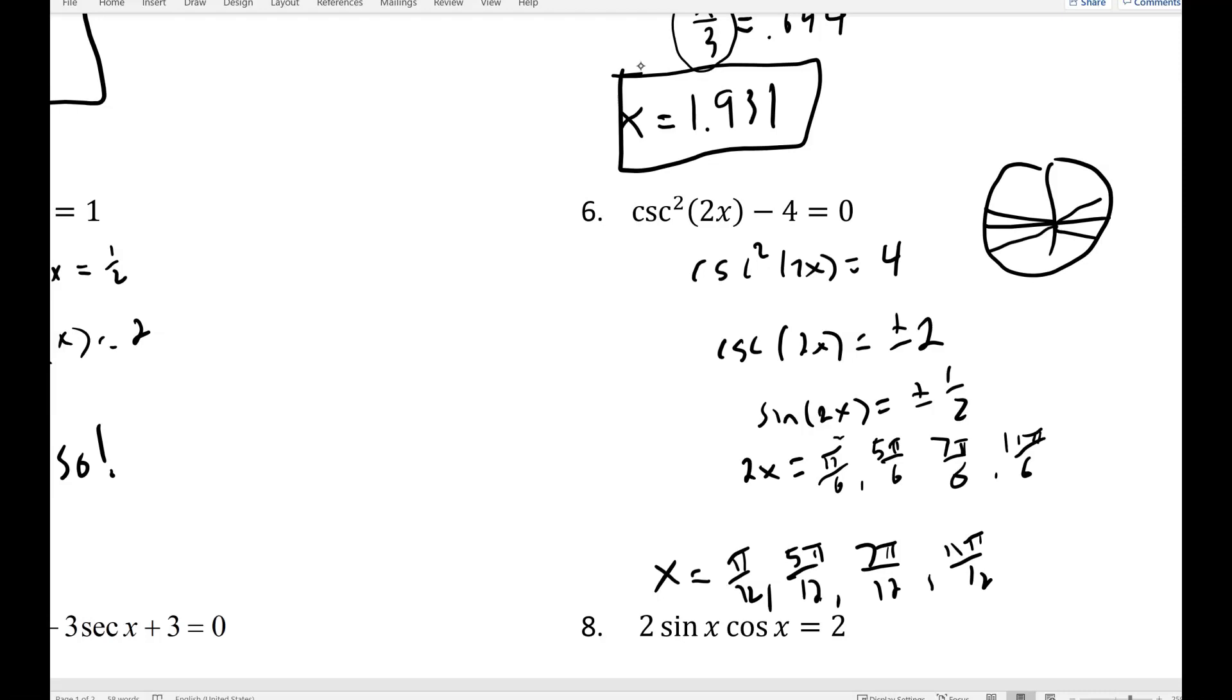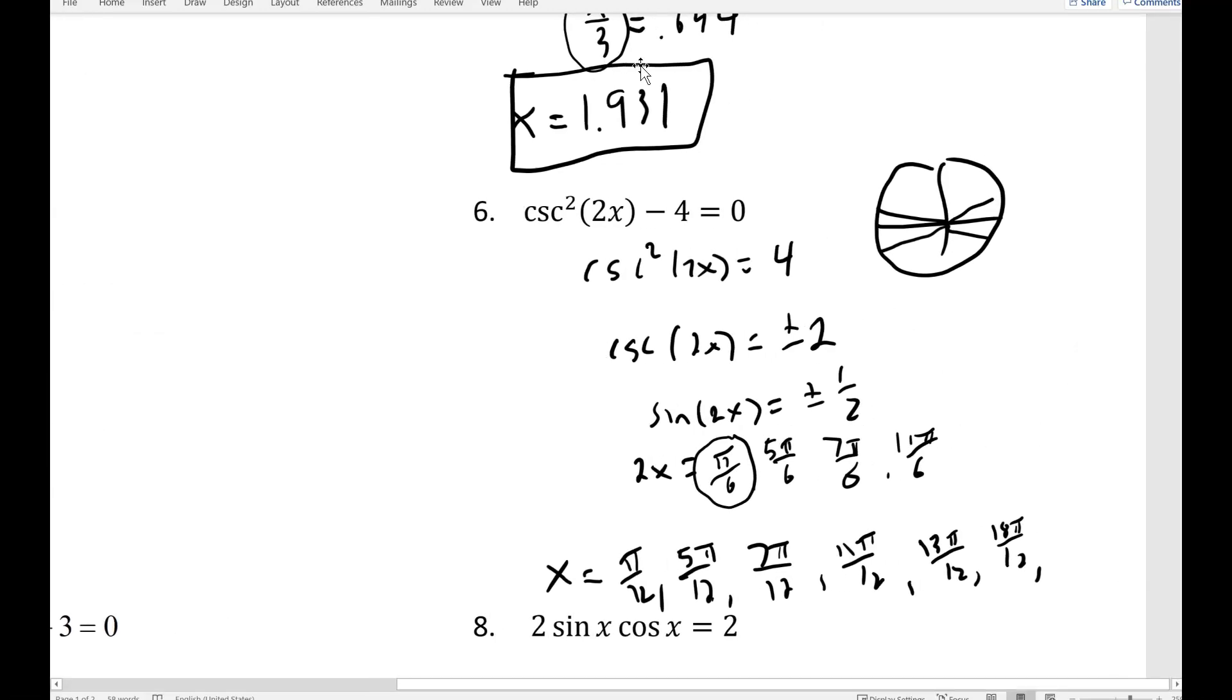So that would be x equals pi over 12, 5 pi over 12, 7 pi over 12 and 11 pi over 12. But there's going to be more. I could keep going. So if I add, essentially, I could add 2 pi to pi over 6 and divide by 2. Or I could add 2 pi, or I could add pi to pi over 12. So that would be 13 pi over 12. And I could add pi to this guy. So that would be 17 pi over 12. I could add pi to that guy. That would be 19 pi over 12. And I could add pi to that guy. And that would be 23 pi over 12. And I know that 24 pi over 12 would be 2 pi. So I think I've hit my limit there. So that would be all my answers.